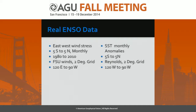Here's the real data: east-west wind stress from five north to five south, from 1980 to 2010, using FSU winds on a two-degree grid, going from New Guinea to the Galapagos. The SST anomalies are from the Reynolds data, over the same grid.